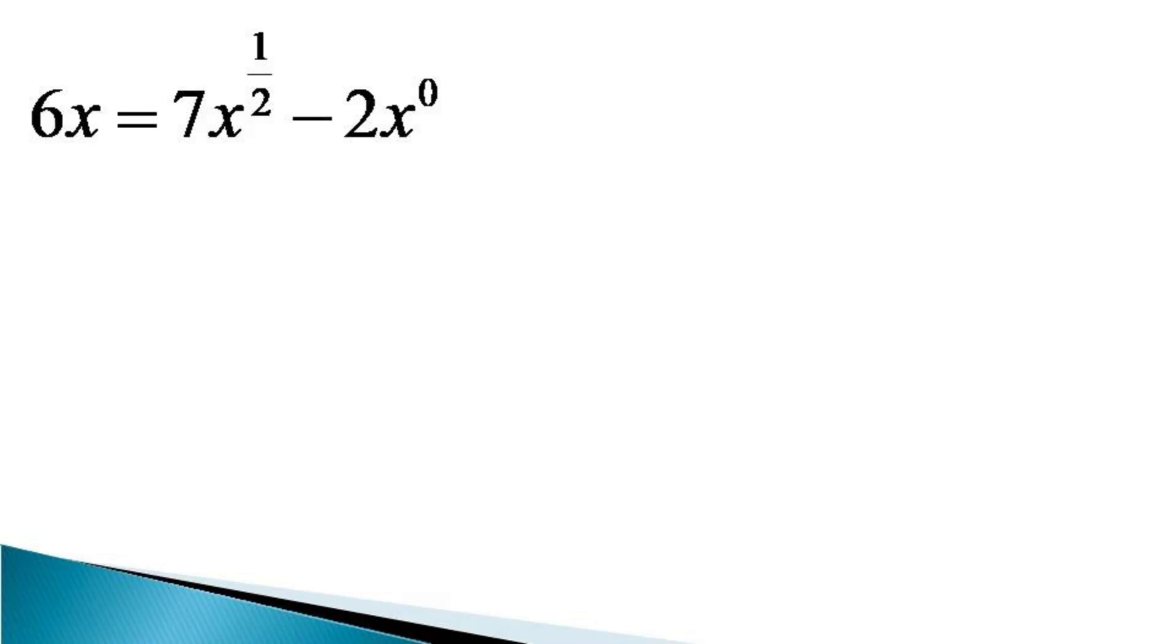Here we can represent x on the left hand side as root x square and bring all the terms on the left hand side to get an equation in the form as 6 into root x whole square minus 7 root x plus 2 is equal to 0.